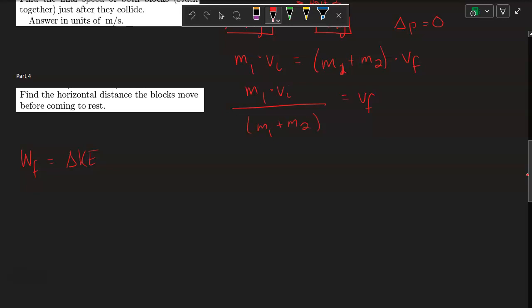The work done by friction is the friction force times the distance these two blocks will travel. That will equal fd cosine theta. That will equal KE final minus KE initial.